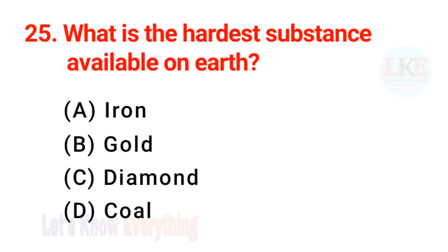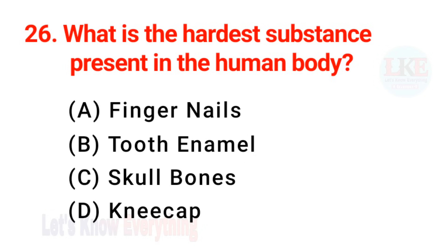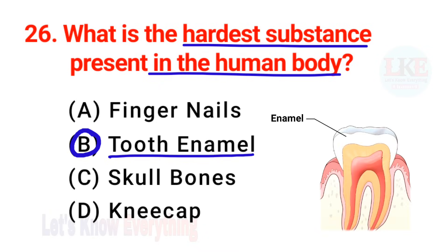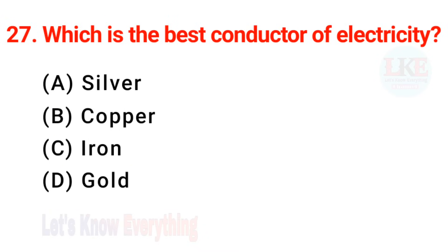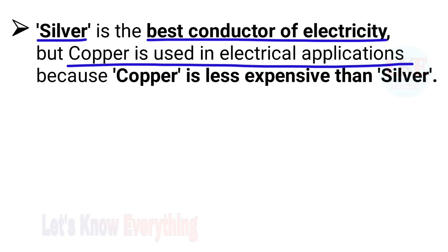Question number 25: what is the hardest substance available on earth? Right answer option C — diamond. Question number 26: what is the hardest substance present in the human body? Right answer option B — tooth enamel. Question number 27: which is the best conductor of electricity? Right answer option A — silver. Silver is the best conductor of electricity, but copper is used in electrical applications because copper is less expensive than silver.